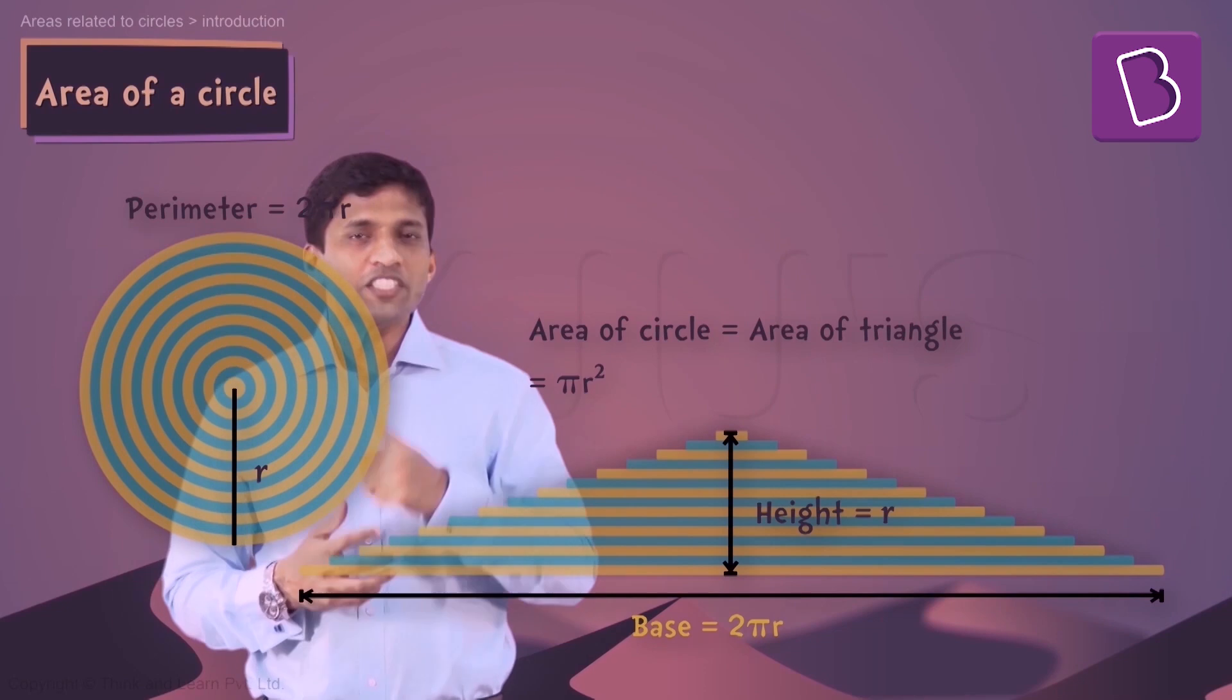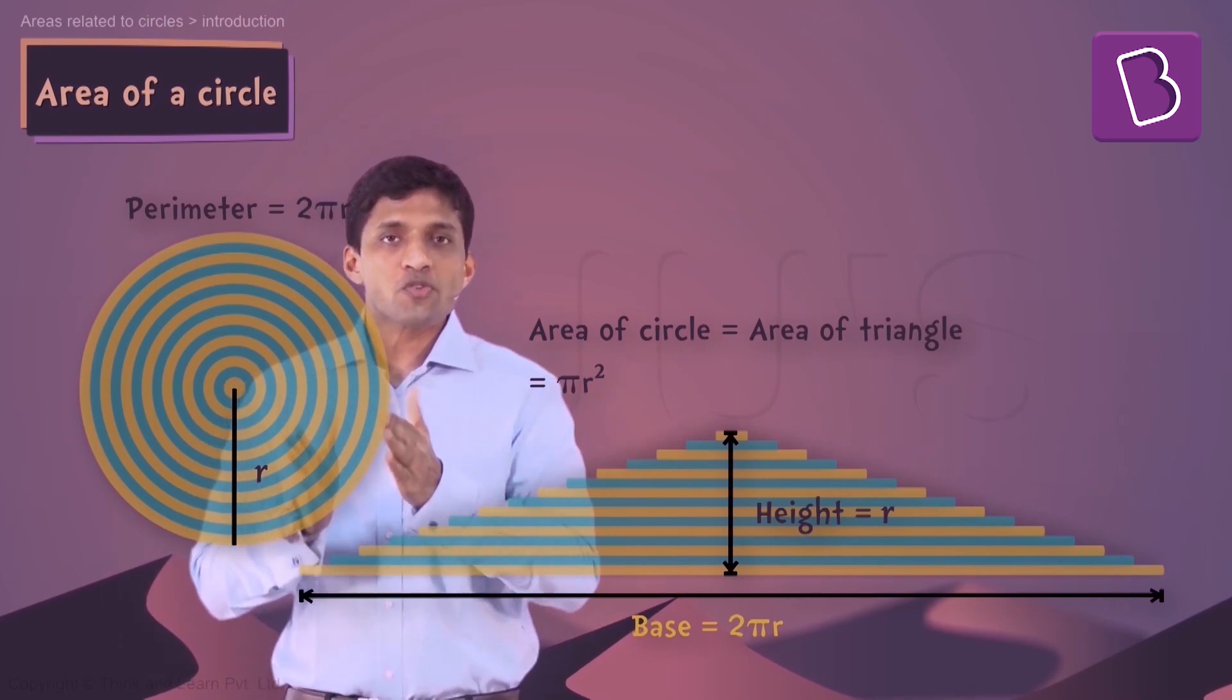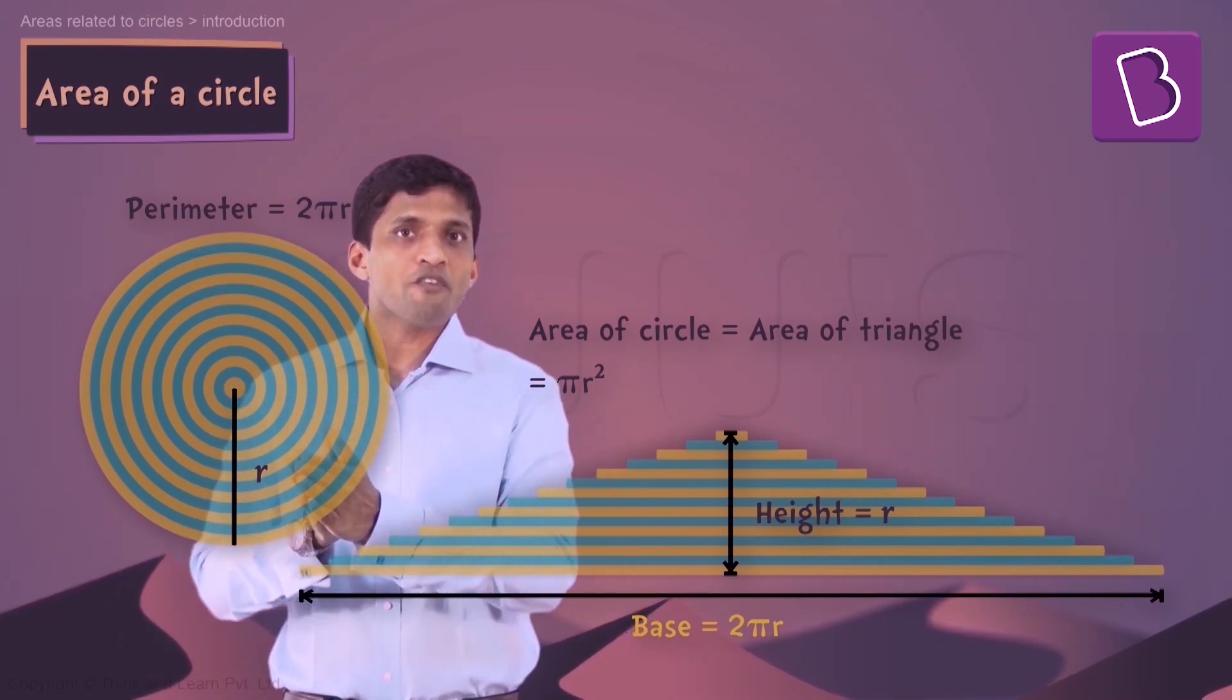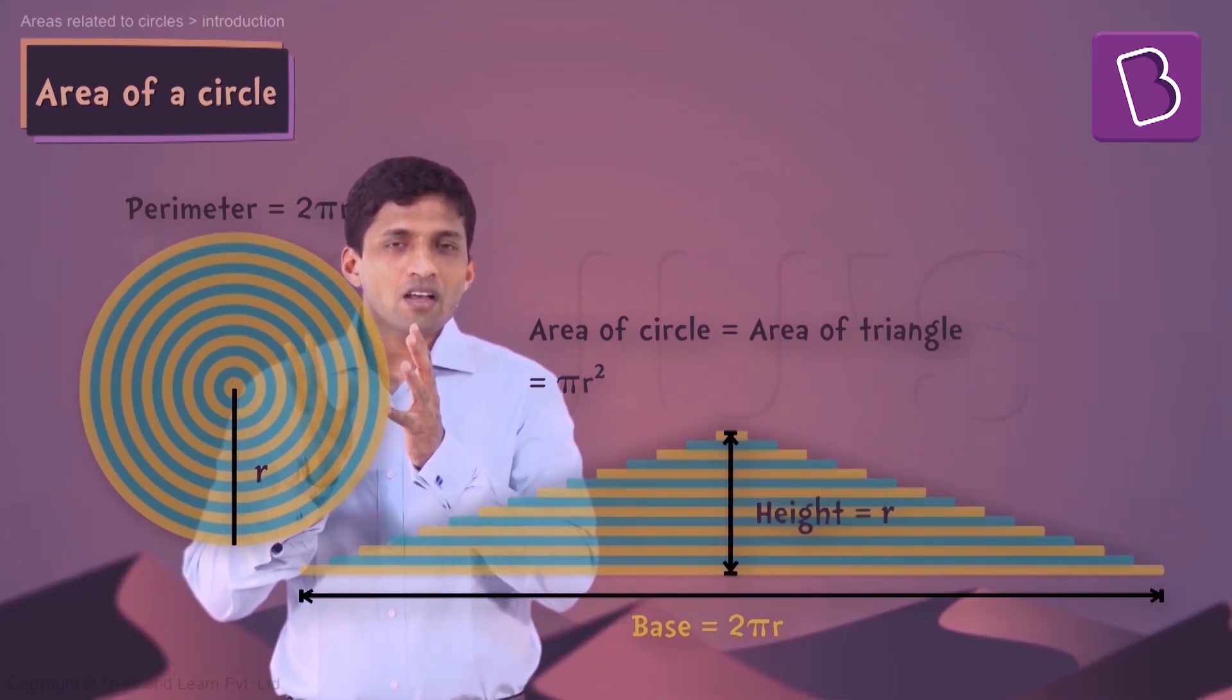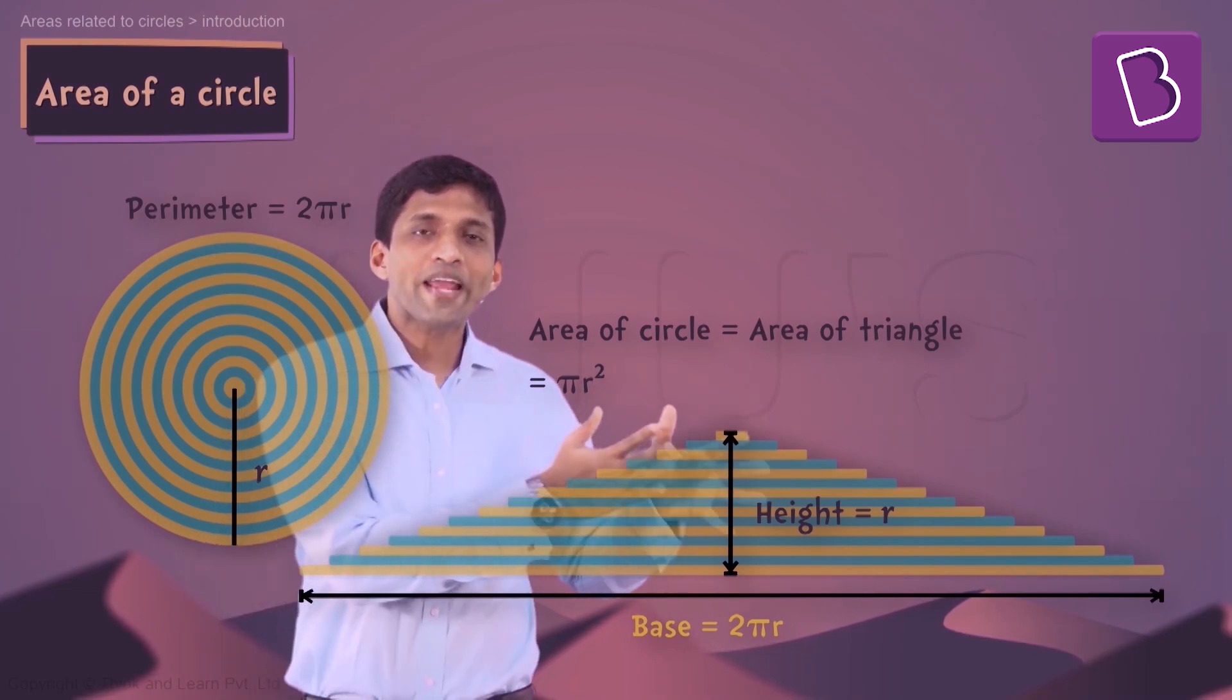Very easy and interesting, right? So this way we can visualize area of a circle using a triangle. And I am sure you have not seen area of a circle explained this way before. Now one more thing which we can do is area of a circle can be visualized in a rectangle also.